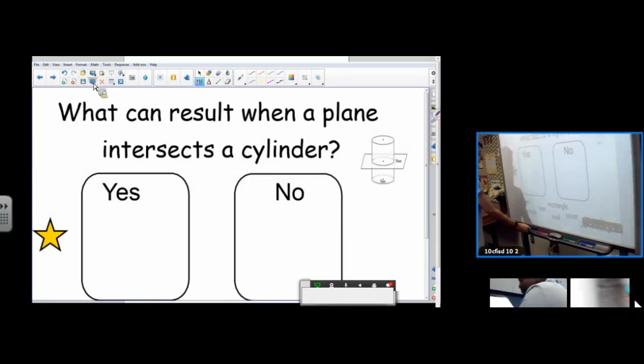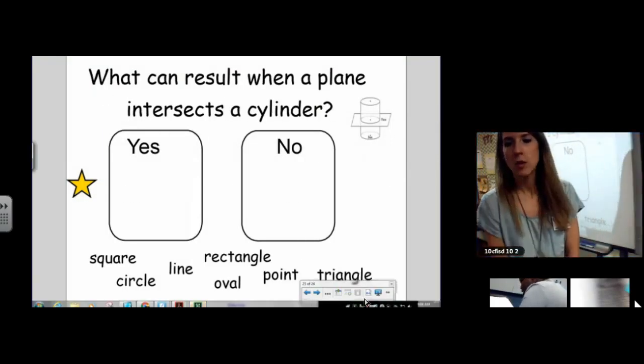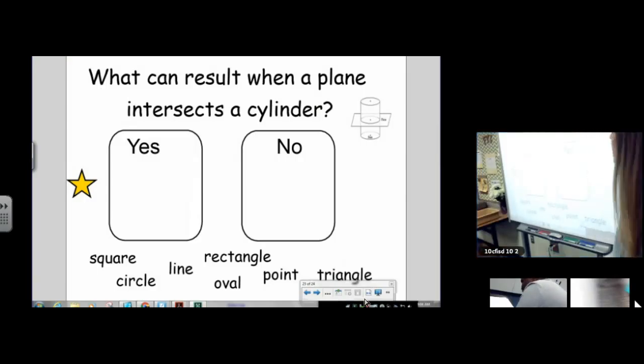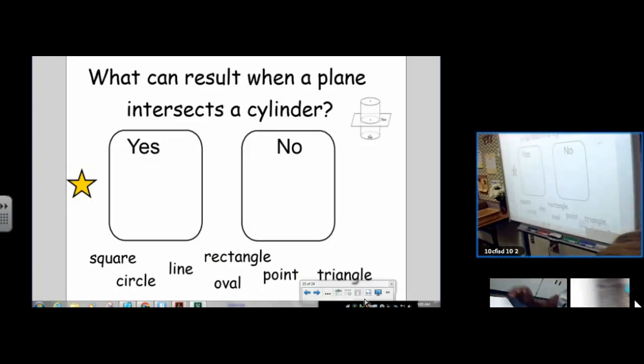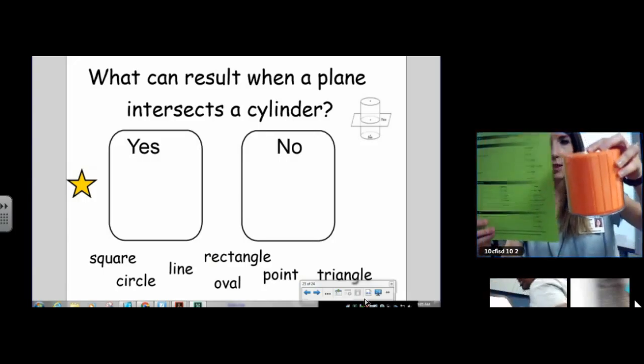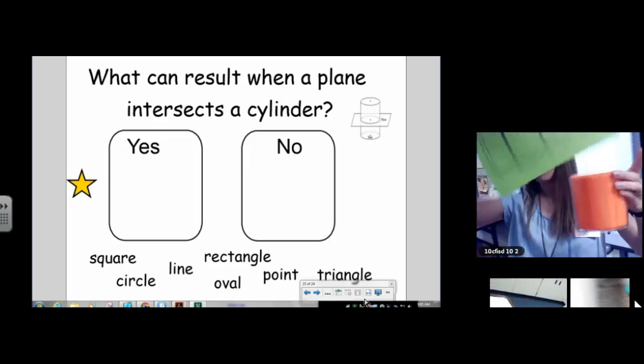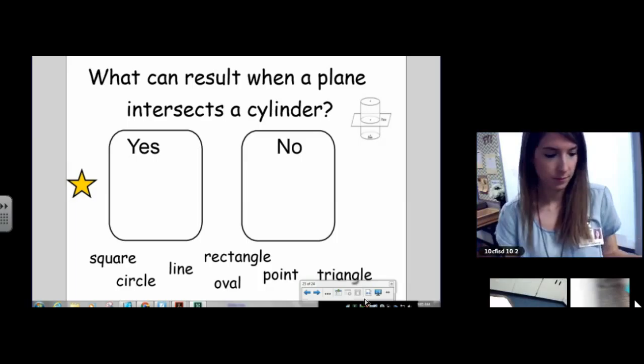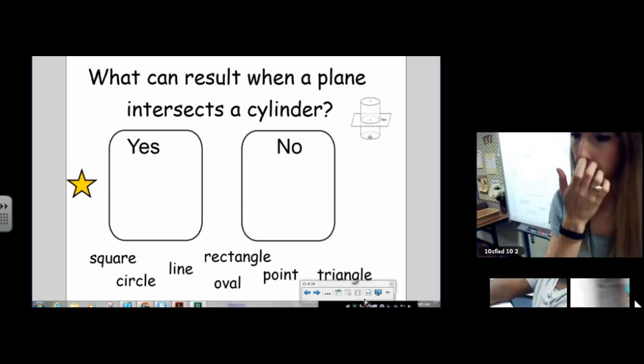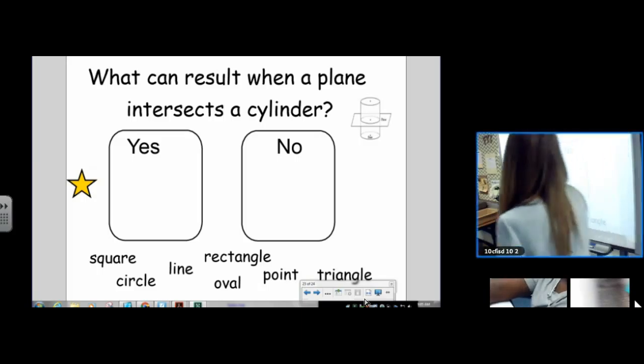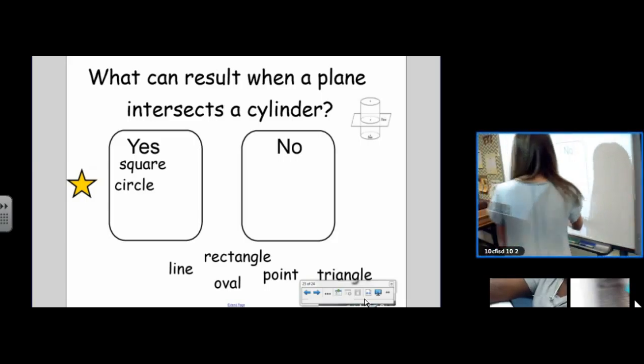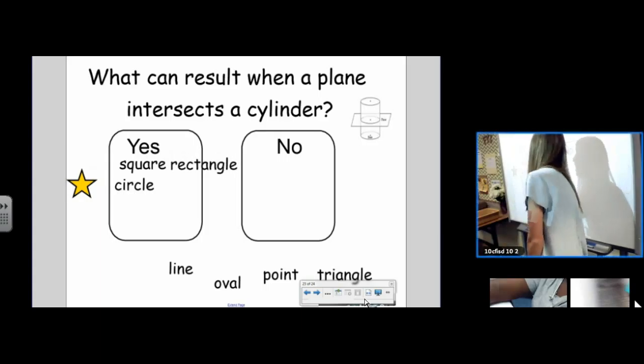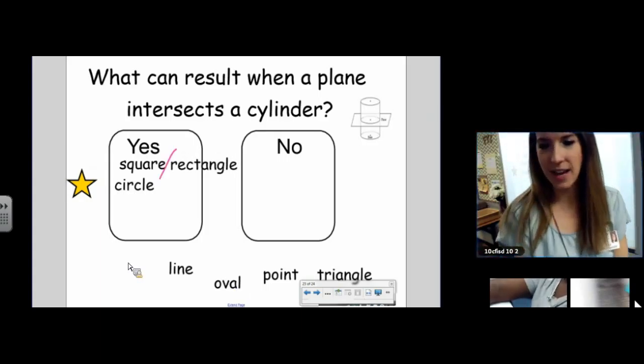So this is the last thing, the last slide for today. And then you can start on your homework. We need to sort these. We need to figure out what can result when a plane intersects a cylinder. What can result when a plane intersects a cylinder? So what things do you think go in the yes column? A square. Yep. A circle. Yes. A rectangle. Square and rectangle go hand in hand. If a square can be created almost every time, a rectangle and vice versa.